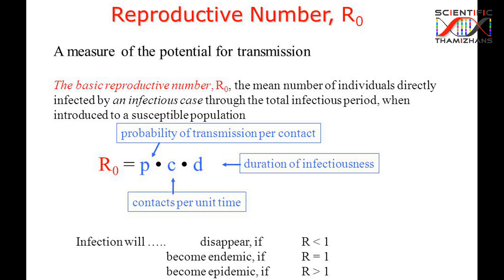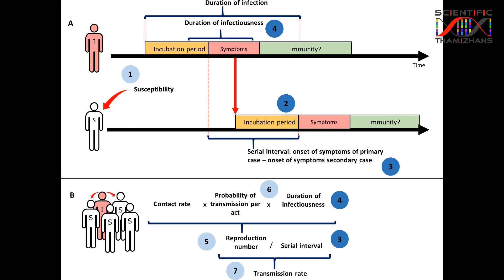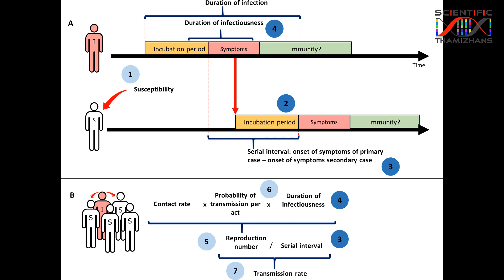This brings us to the reproductive number, or R0. The incubation period — from when the virus enters the body to when symptoms appear — is generally accepted to be around 2 to 14 days. The disease can range from mild to moderate, and many people recover normally.